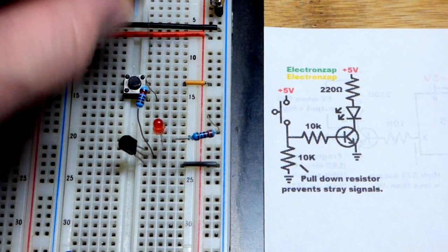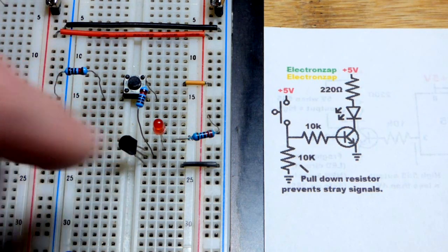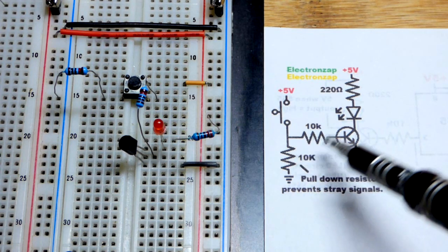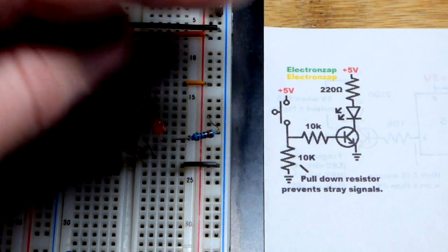So, the pull-down resistor, that makes a direct connection to ground, which also helps hold the transistor off because it prevents current from flowing when the switch is open. And so, now you can see,